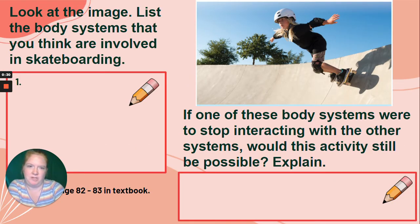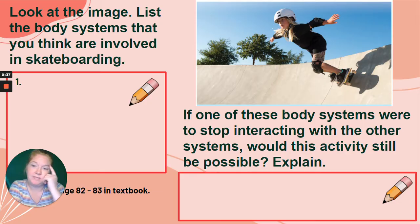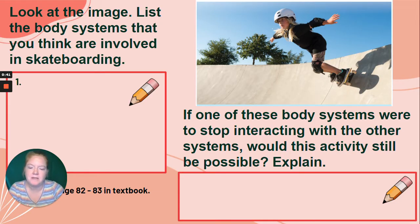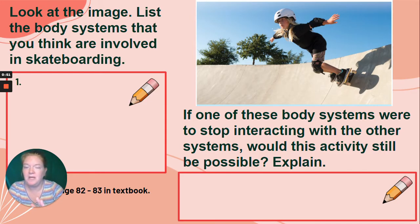Let's look at the image. What body systems do you think are involved in skateboarding? We have muscular, skeletal, respiratory, integumentary, digestive, circulatory, excretory, and immune. Think about which systems are involved in skateboarding.